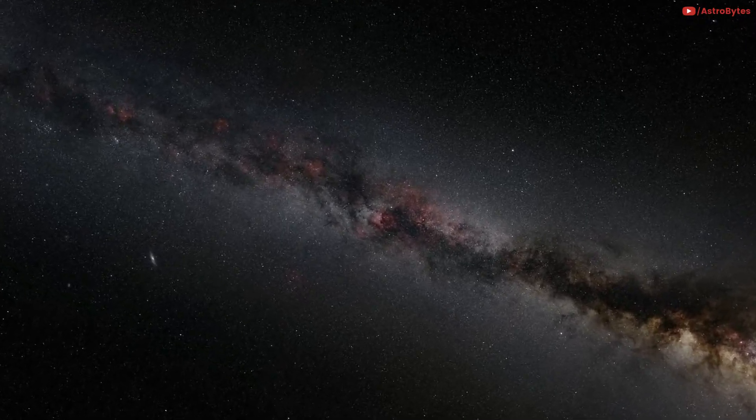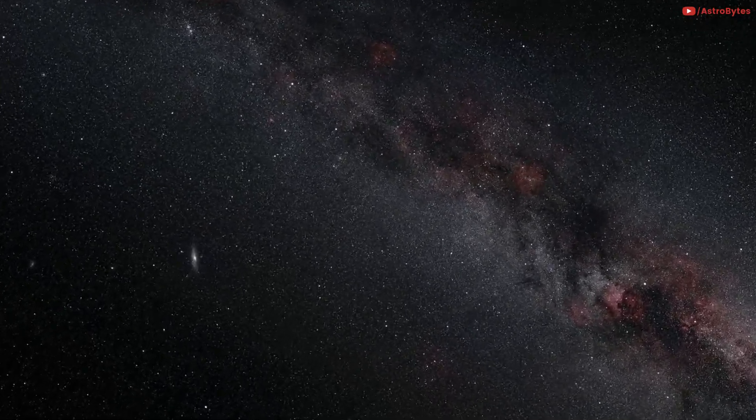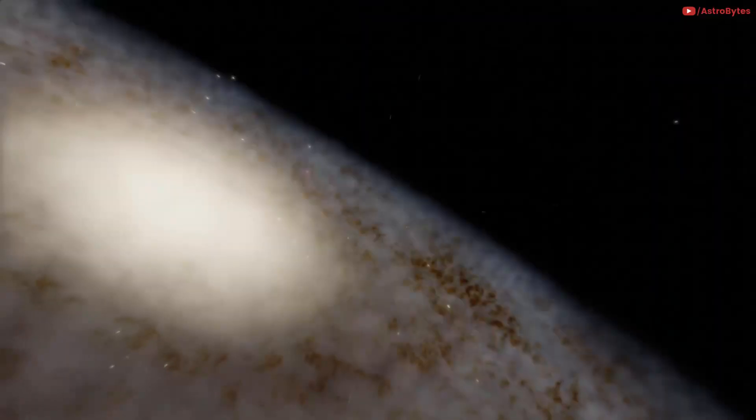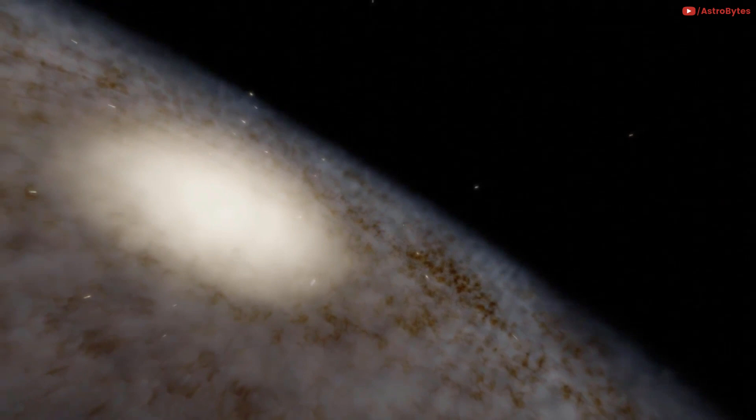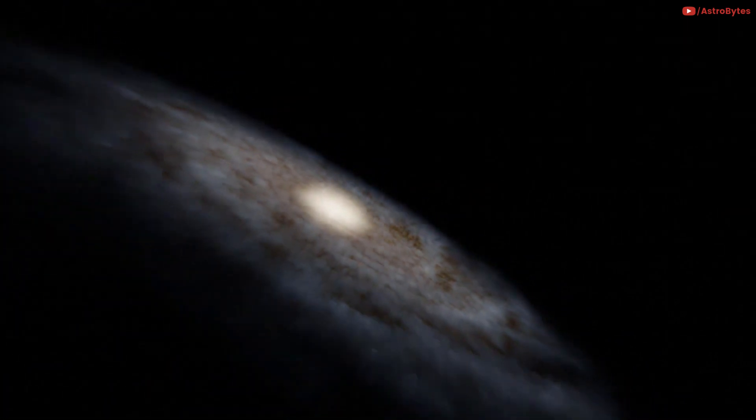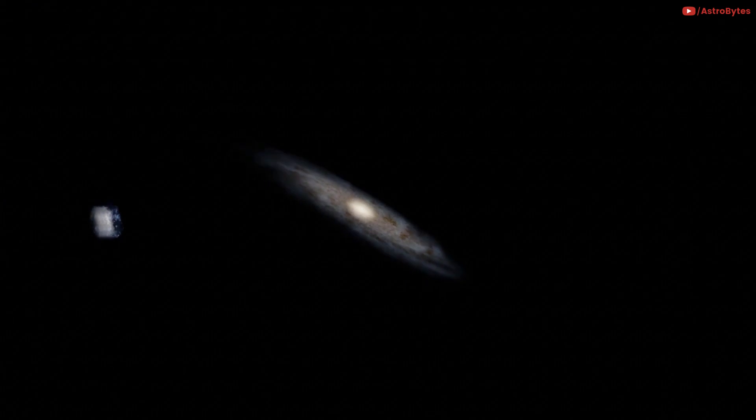It is 2.5 million light years away from Earth. It is the most distant naked eye object you can see in the night sky. Although several dozen minor galaxies lie closer to our Milky Way, the Andromeda galaxy is the closest large spiral galaxy to ours.